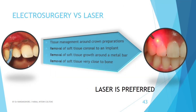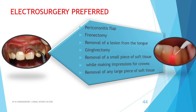Some procedures where laser is preferred over electrosurgery include tissue management around crown preparations, removal of soft tissues coronal to an implant, removal of soft tissue growth around a metal bar, and removal of soft tissue very close to bone. Cases where an electrosurgical procedure is preferred over laser include pericoronitis flap removal, frenectomy, removal of a lesion from the tongue, gingivectomy, removal of a small piece of soft tissue while making impressions for crowns, or removal of any large piece of soft tissue.